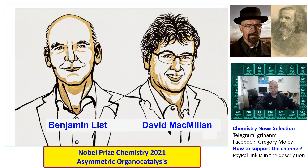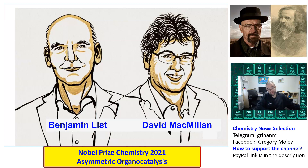Today I'm going to talk about Benjamin List's recent work. David McMillan is doing amazing chemistry right now, but he moved away from asymmetric organocatalysis — he's doing photocatalysis with transition metals and may get another Nobel Prize for this sometime later. In this channel, I prefer to show recent works related to the topic for which those two guys got the Nobel Prize. You can see other videos in other channels; the Nobel Prize press release covers the foundational topic pretty well.